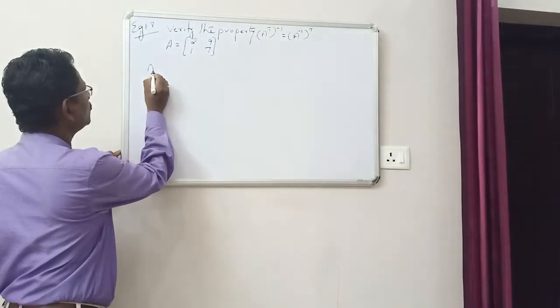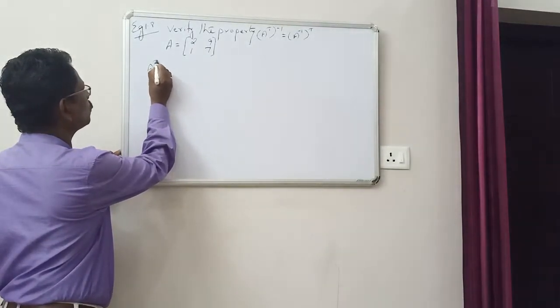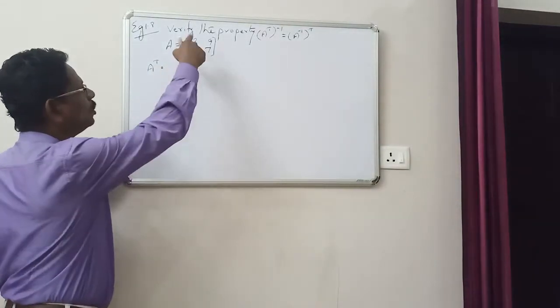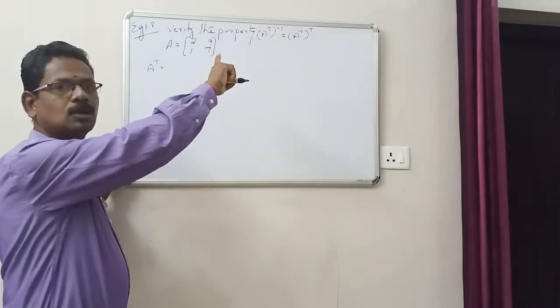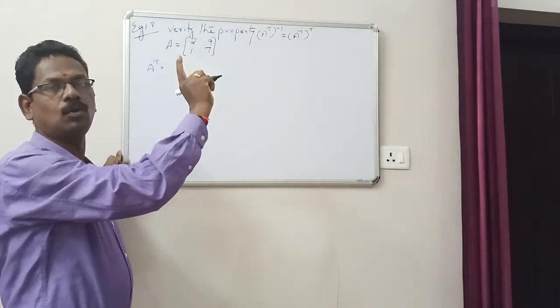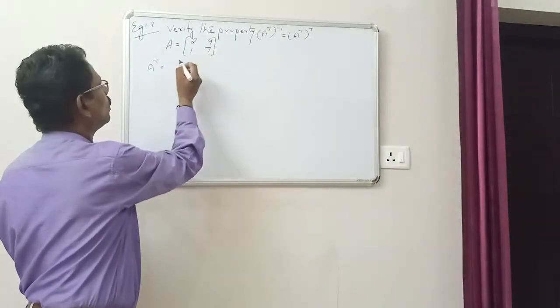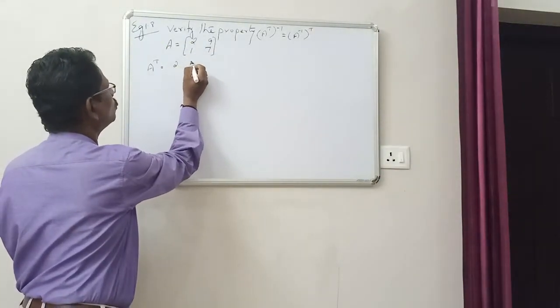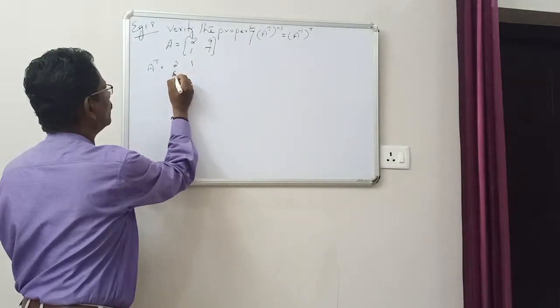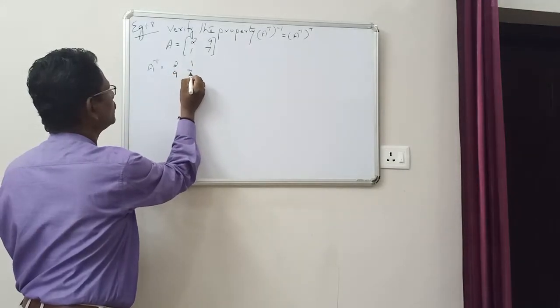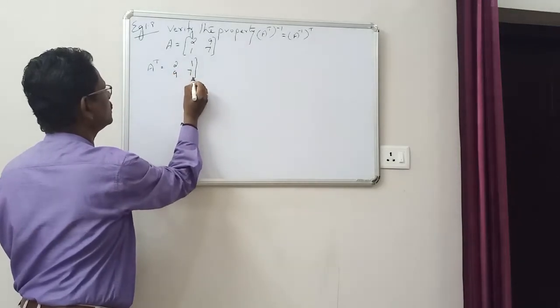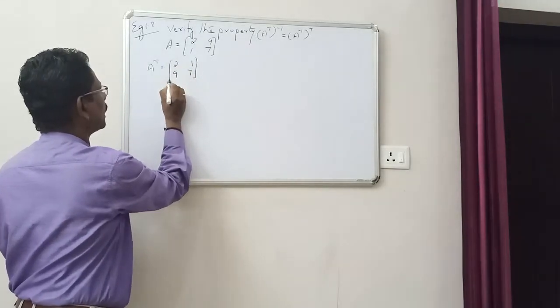What is A transpose? A transpose means rows become columns and columns become rows. So A transpose is [[2, 1], [9, 7]]. This is A transpose.